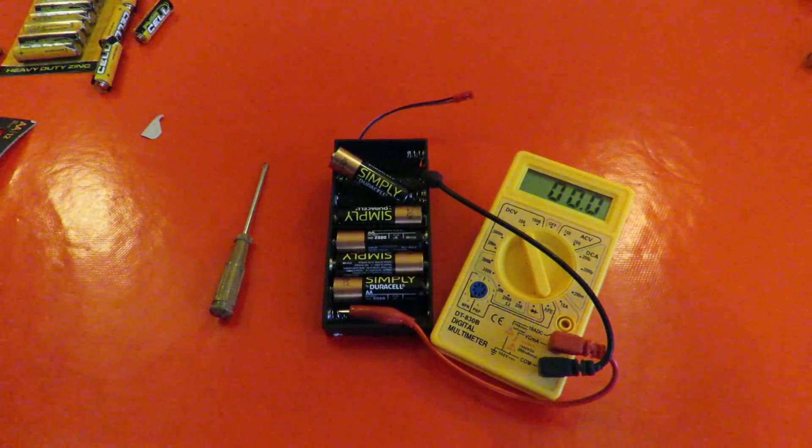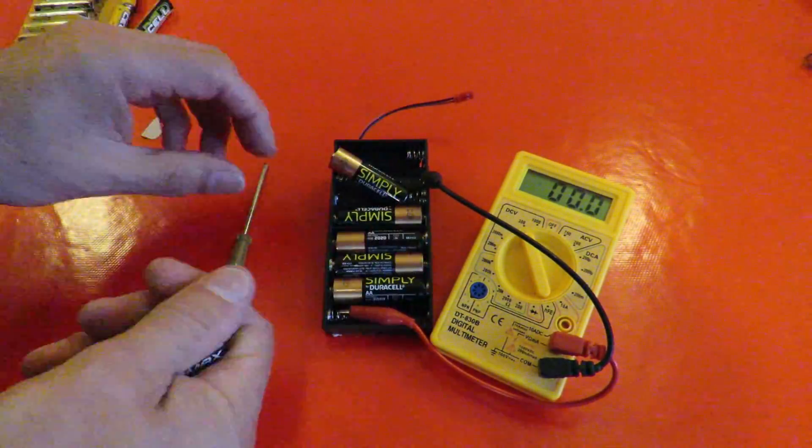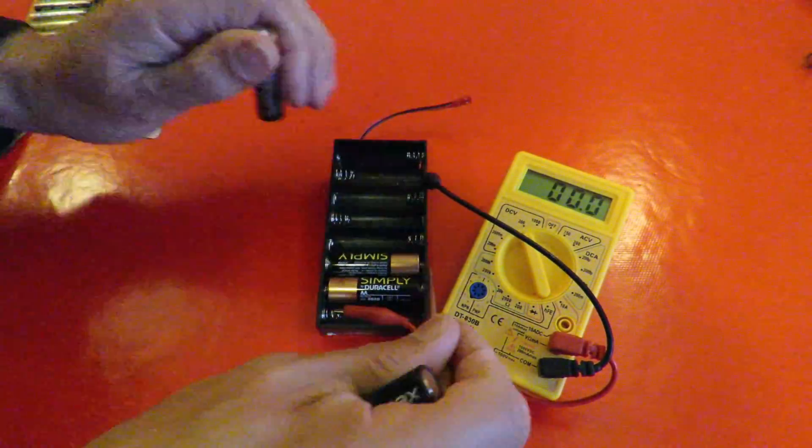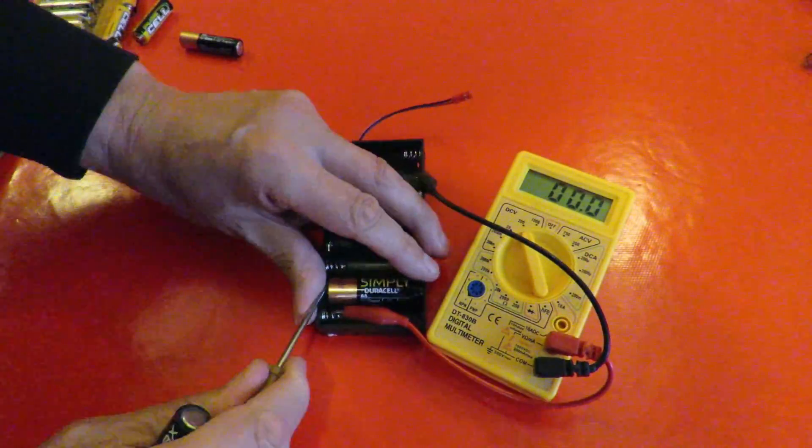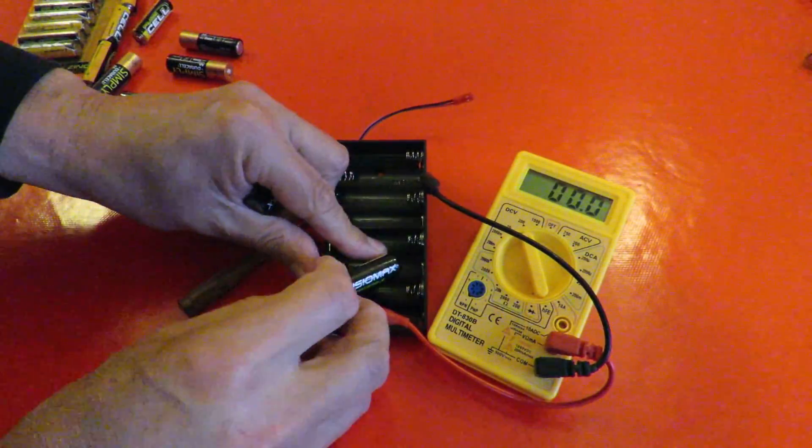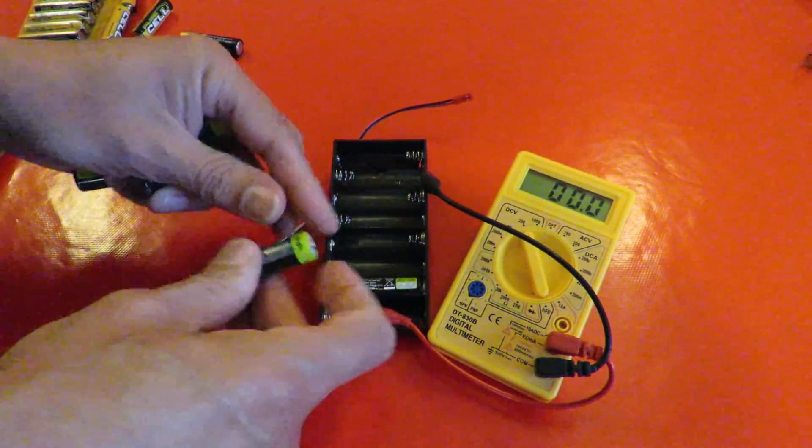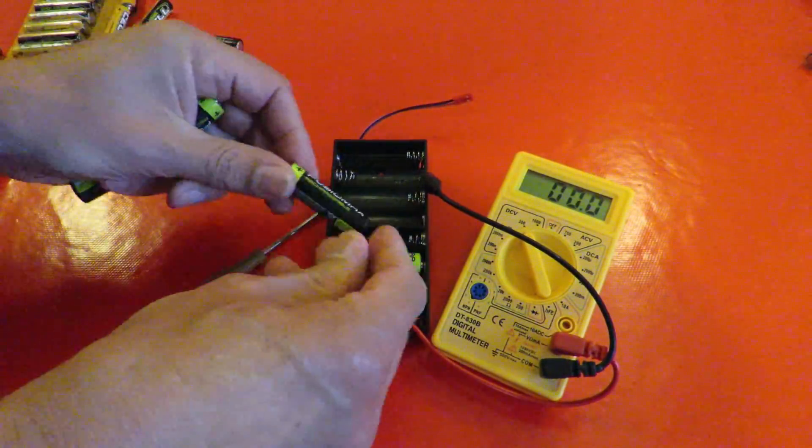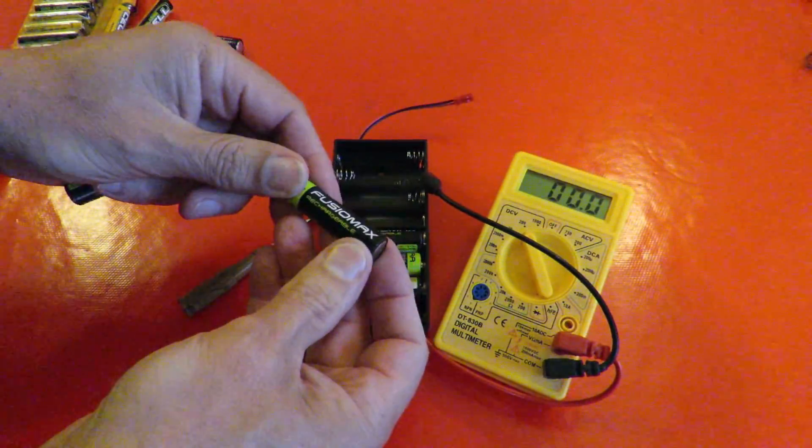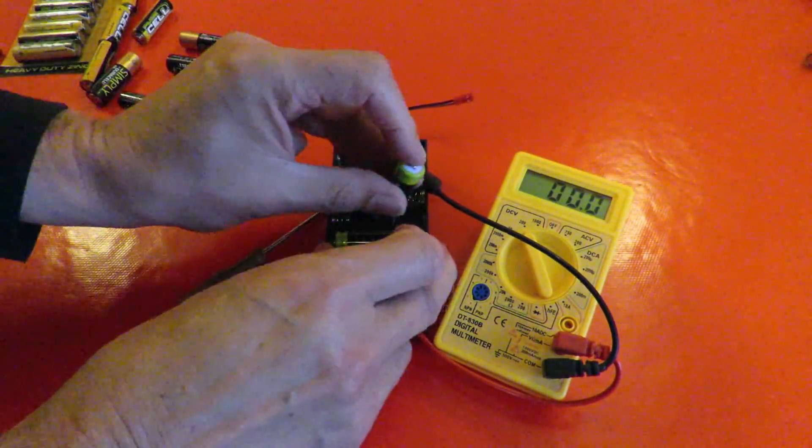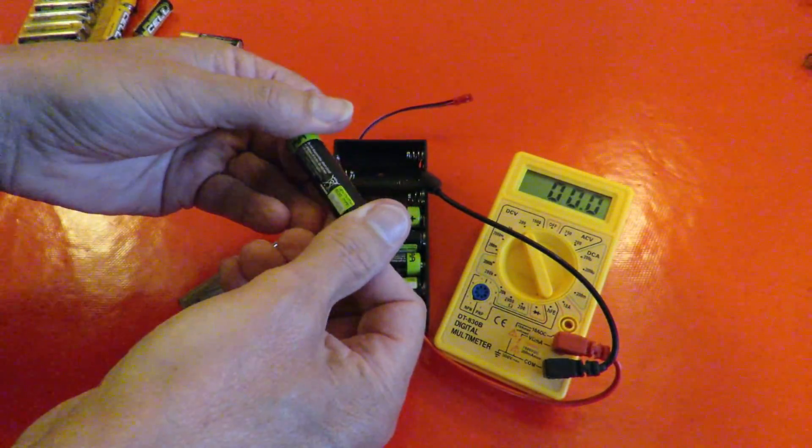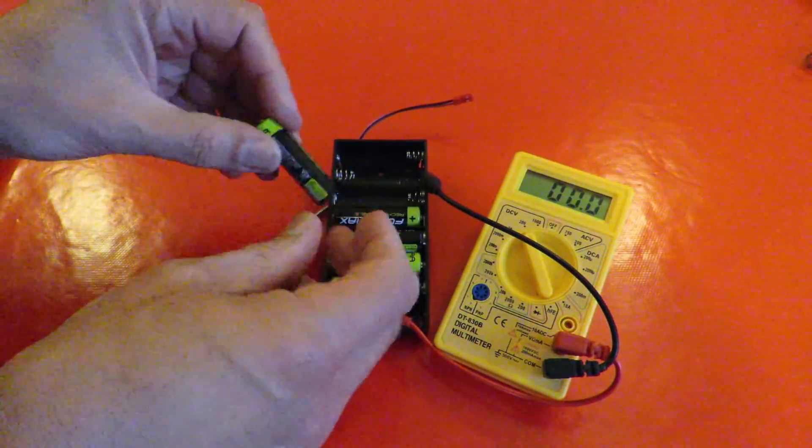I was just going to put it all away and I remembered I was also going to try five nickel metal hydride batteries. So freshly charged nickel metal hydride, these are cheap pound land ones only rated at I think they're 800 milliamp hours. Yeah, 800 milliamp hours. Ready?